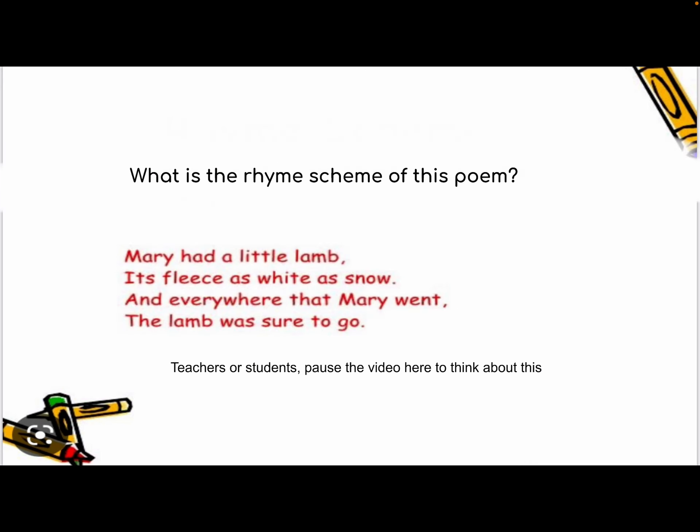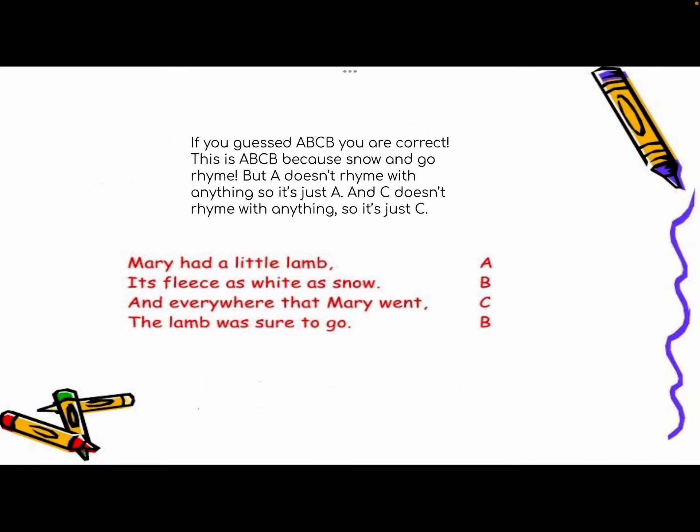Okay, so what is the rhyme scheme of this poem? Mary had the little lamb, its fleece was white as snow, and everywhere that Mary ran, the lamb was sure to go. Teachers or students, please pause the video here to think about this. Well, if you guessed A-B-C-B, you are correct.